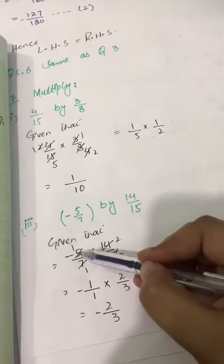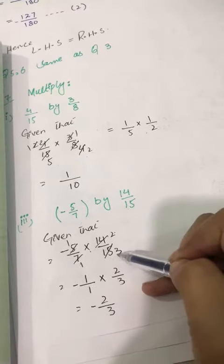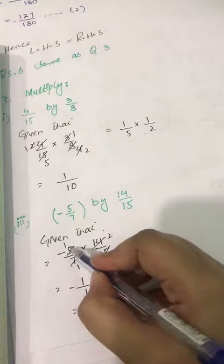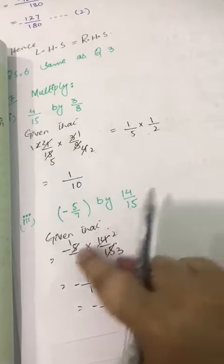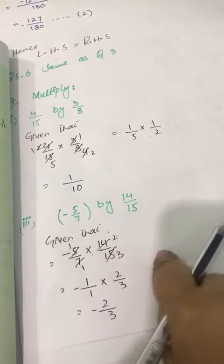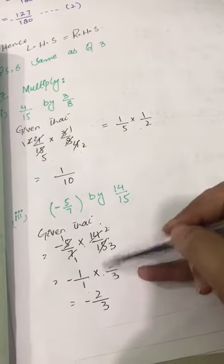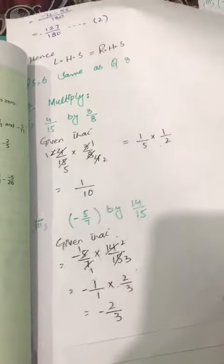Minus 5 by 7 multiply by 14 divided by 15. Cutting हो रही है: 7, 1 the 7, 1 and 7, 2 the 14, 5, 1 the 5 and 5, 3 the 15. Cutting है मेशा जो आपने opposite values की करनी है या उपर नीचे की करनी है. आपने सामने values की cutting नहीं होती कभी भी. Minus 1 over 1 multiply by 2 by 3, 2 by 3, answer.